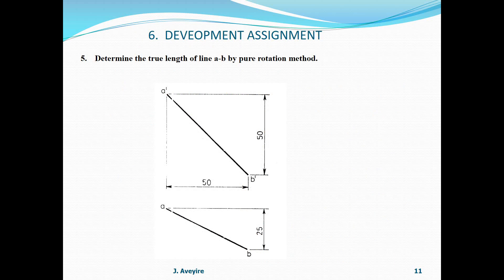Assignment 5: Determine the true length of line AB by the pure rotation method. The front view and top view of the lines are given. A neat and legible drawing is required, and the title block must be completed. The file name must follow this format: ME160, space, 6, dash, 5, space, followed by your index number. Please take note of these instructions.